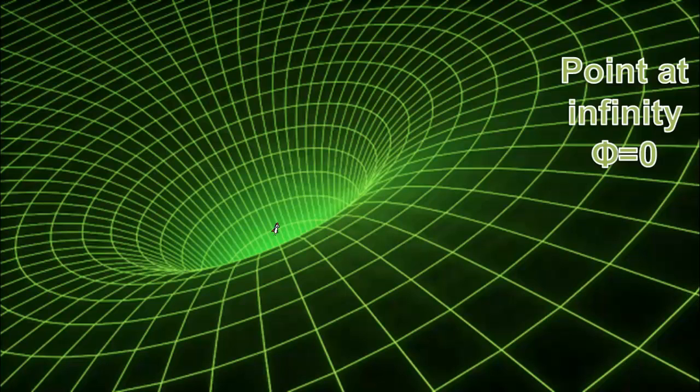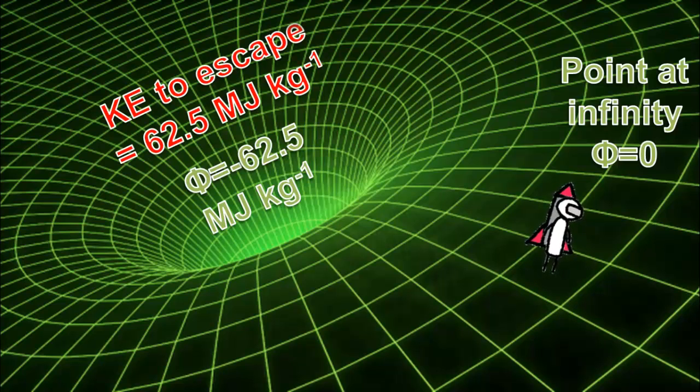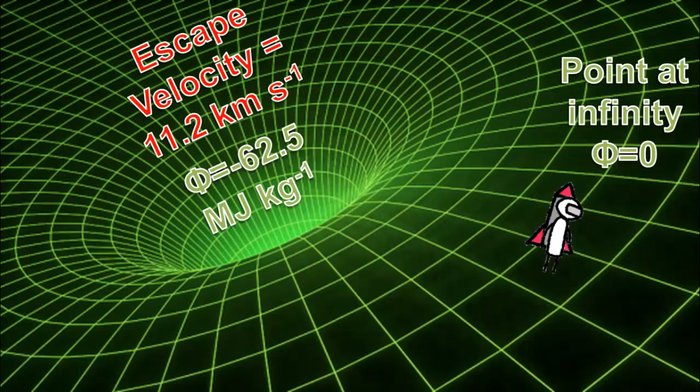Reaching the point at infinity means we have escaped from the Earth's gravitational well. The gravitational potential on the surface of the Earth is about negative 62.5 megajoules per kilogram. To be able to just reach the point at infinity from here, one needs to launch off with 62.5 megajoules of KE per kilogram of mass. The escape velocity turns out to be about 11.2 kilometers per second.